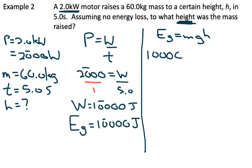Substitute in: we have 10,000 joules for Eg, mass 60.0 kilograms, g—didn't define it in the variables, but it's always 9.8 meters per second squared—and h is what we don't know.